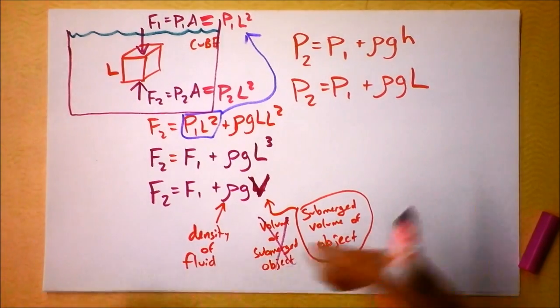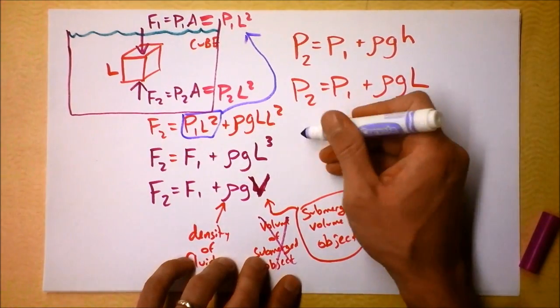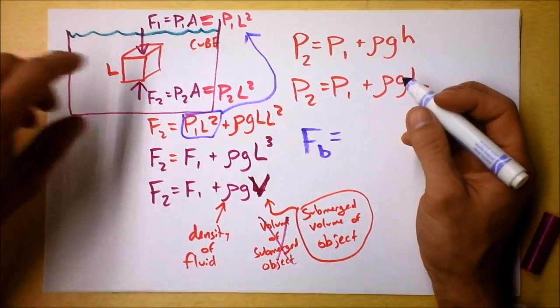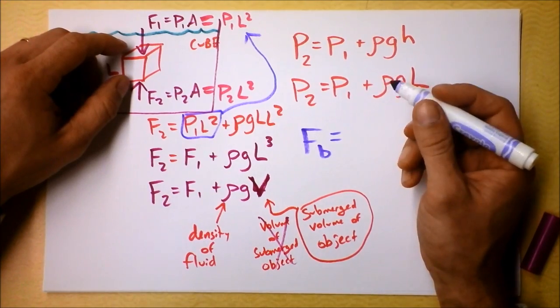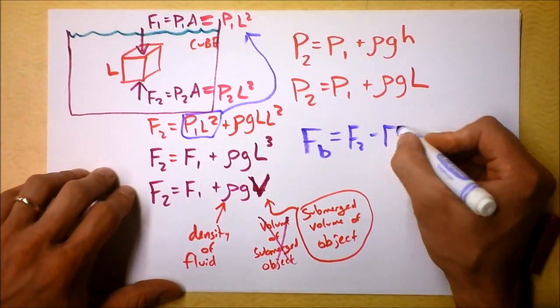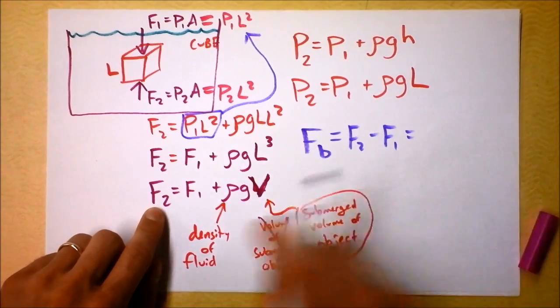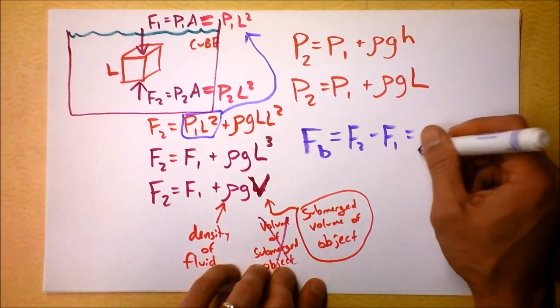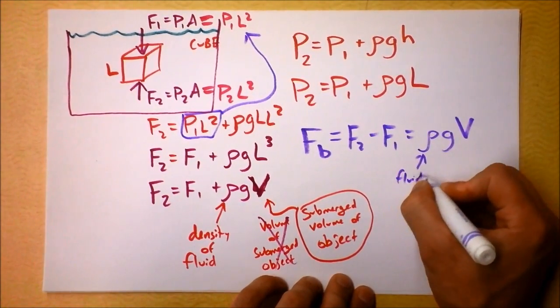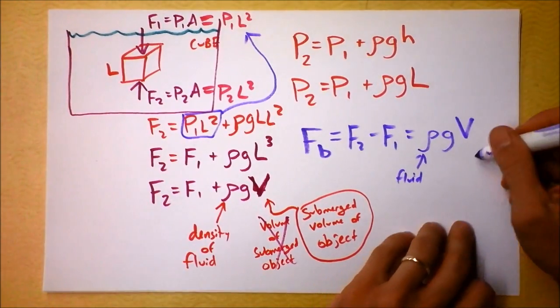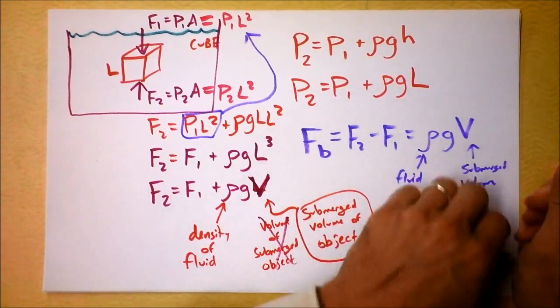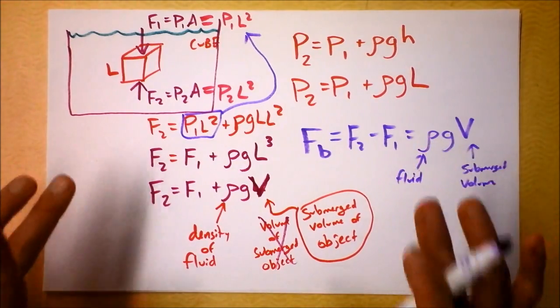So I want to now consider the buoyant force and I'm going to define it for you right now. Force buoyancy is equal to the difference between these two forces. And I guess it's going to be an upward force. So I'm going to say that it's the upward force F2 minus the downward force F1. So if I say F2 minus F1, that's easy. F2 minus F1 is simply rho G V. Rho G V. The most important thing about this is that this is the fluid. It's the fluid's density, not the object's density. And this is the submerged volume. Submerged volume right there. As long as you understand that, you're going to rock buoyant force.